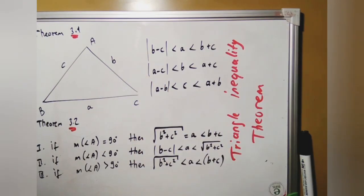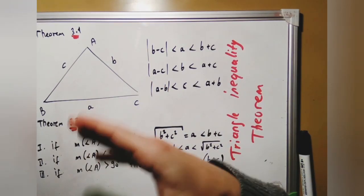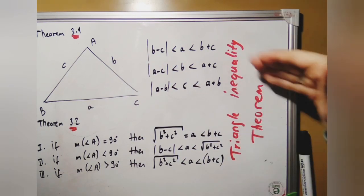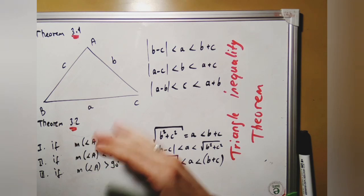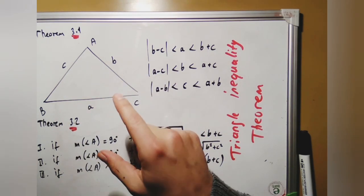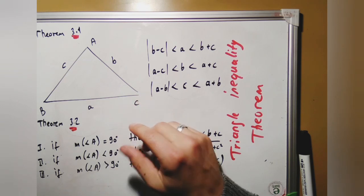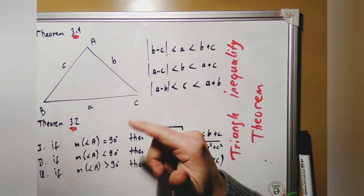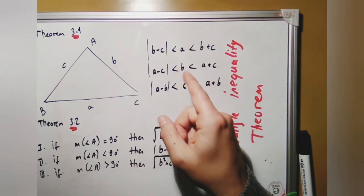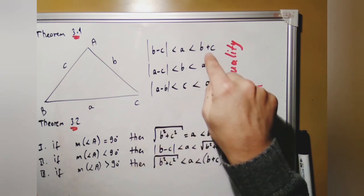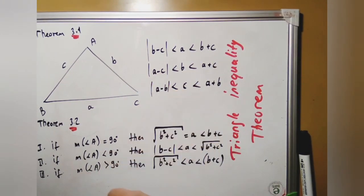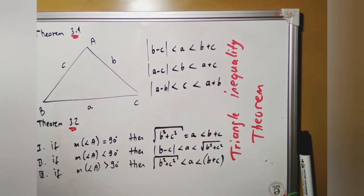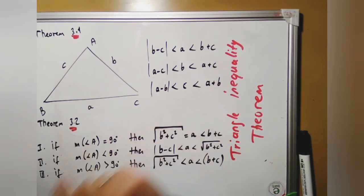Theorems 3.1 and 3.2: In Theorem 3.1, the triangle inequality theorem states that the length of one side of a triangle is greater than the absolute value of the difference of the other two sides, and less than the sum of the other two sides. So side a is between |b − c| and b + c; side b is between |a − c| and a + c; and side c is between |a − b| and a + b.